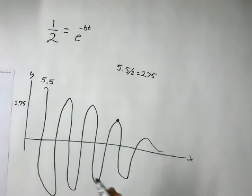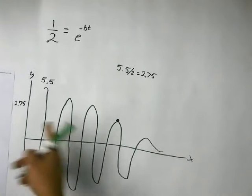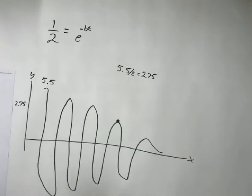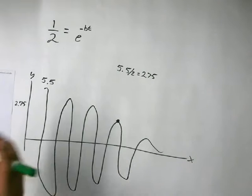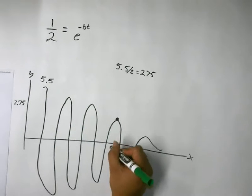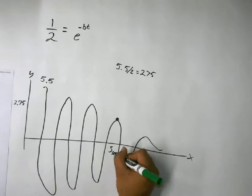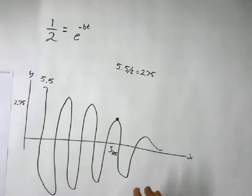So half of that is 2.75. So according to this chart, it's between 3 and 2.5. So we're going to say that's about the 4th one, and that occurs at about 3 seconds. So your time, the variable for time is 3 seconds, so t equals 3 seconds.